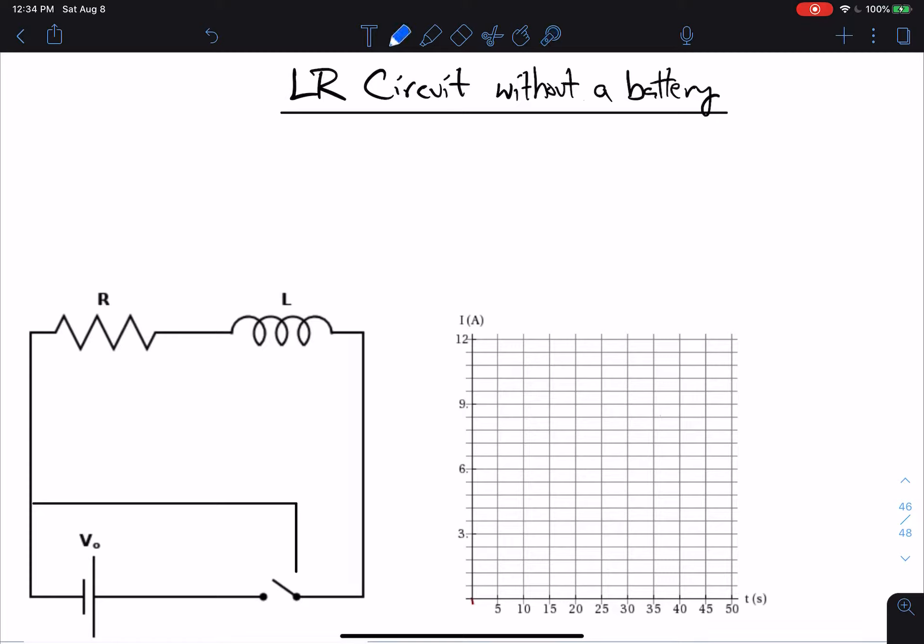So what would that look like? It would look like this. If I had let it go, say it started at nine, and then if I only have a resistor, I suddenly flip the switch, there's no inductor, well then it just goes right down to zero. It would just drop to zero.